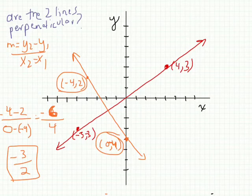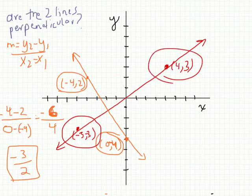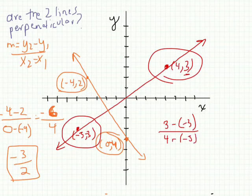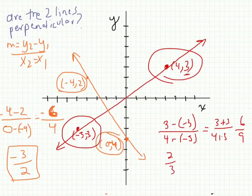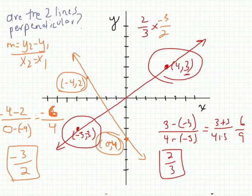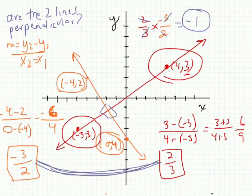For the red line, with our first and second coordinates: y2 minus y1 is 3 minus negative 3, and x2 minus x1 is 4 minus negative 5. That gives 6 over 9, which reduces to 2/3. Now, does 2/3 times negative 3/2 equal negative 1? The 2's cancel, the 3's cancel, leaving a negative — yes, they equal negative 1. So these are perpendicular lines. They are negative reciprocals of each other.